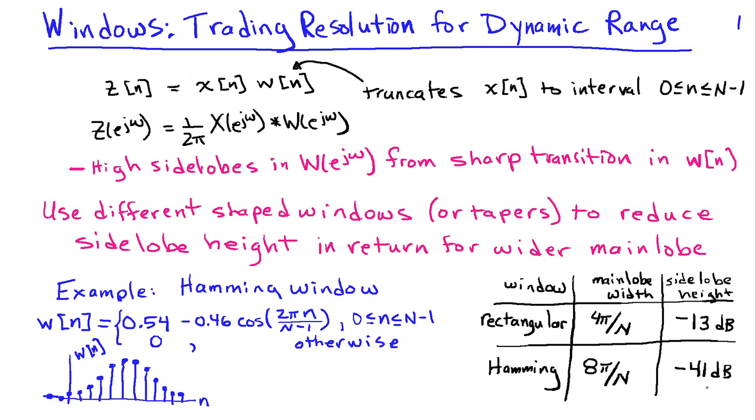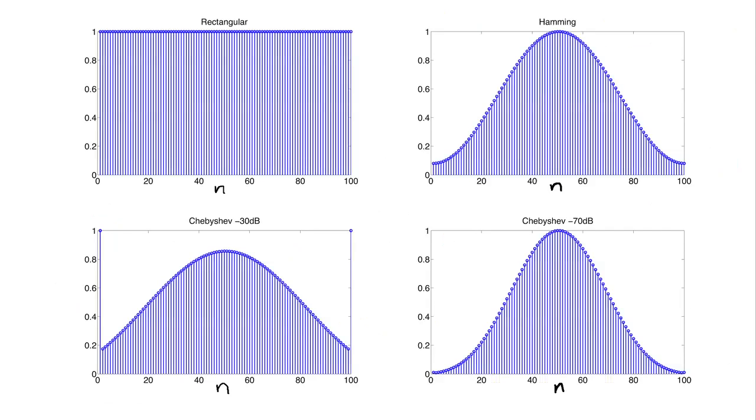So I've got a few examples that we're going to look at here. I chose four different windows, and I'm showing the window functions in the time domain here for comparison. So I've chosen the rectangular window is in the upper left here, and then the so-called hamming window, which I wrote the equation for a moment ago, is in the upper right.